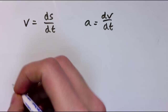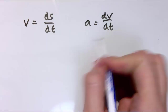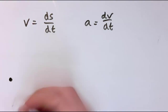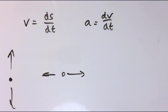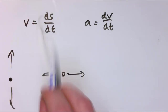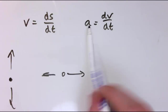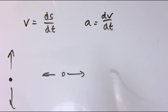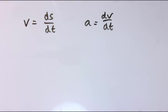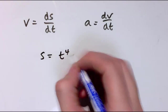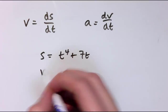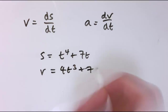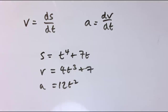In a previous video we were thinking about problems with one-dimensional motion — something moving up, down, or across in one direction. We worked out that velocity is the rate of change of displacement with respect to time, and acceleration is the rate of change of velocity with respect to time. So we can differentiate a formula like s = t⁴ + 7t to get velocity = 4t³ + 7, and acceleration = 12t².